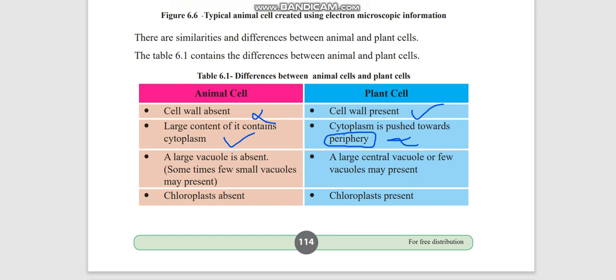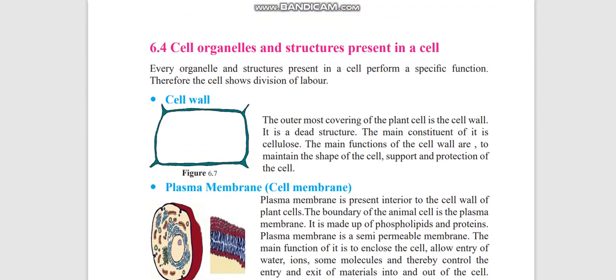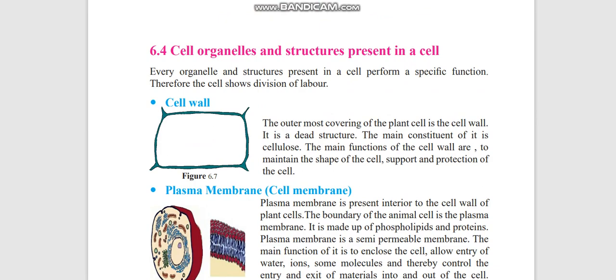Now we'll study each and every cell organelle. First one is cell wall. Cell wall is present in the outermost covering of the plant cell. This cell wall is made up of cellulose and it is a dead structure. It maintains the shape of a cell, gives support and protection to the cell.